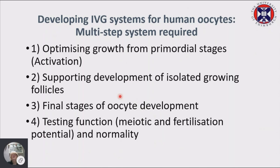We have a challenge to develop these immature oocytes entirely in vitro to the point where they can be matured and fertilized. We're looking at optimizing the growth of primordial stages — the activation — then isolating growing follicles and growing them further, and then focusing on the oocyte and the final stages of oocyte development. Then we want to test their function: the meiotic capacity, the fertilization potential, and whether they're normal.